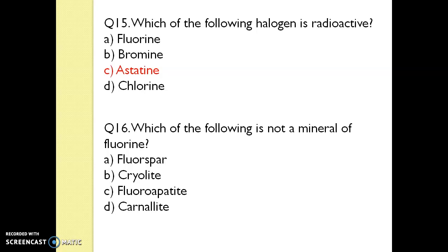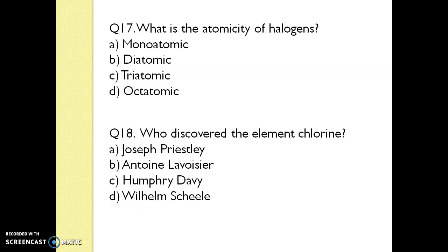Question 16. Which of the following is not a mineral of fluorine? The answer is carnallite. Question 17. What is the atomicity of halogens? They are diatomic, so the answer is diatomic. Question 18. Who discovered the element chlorine? The answer is William Scheele.